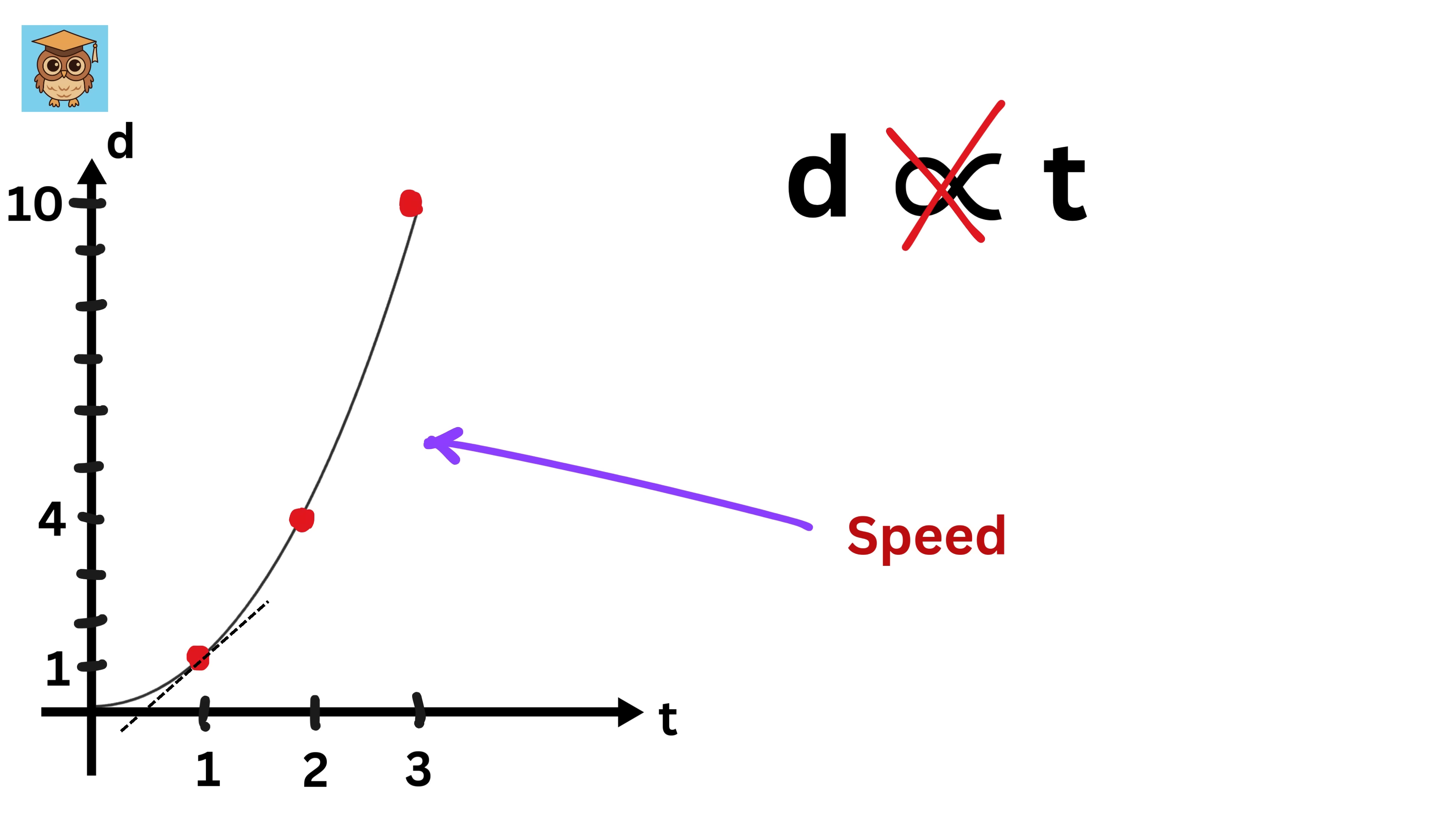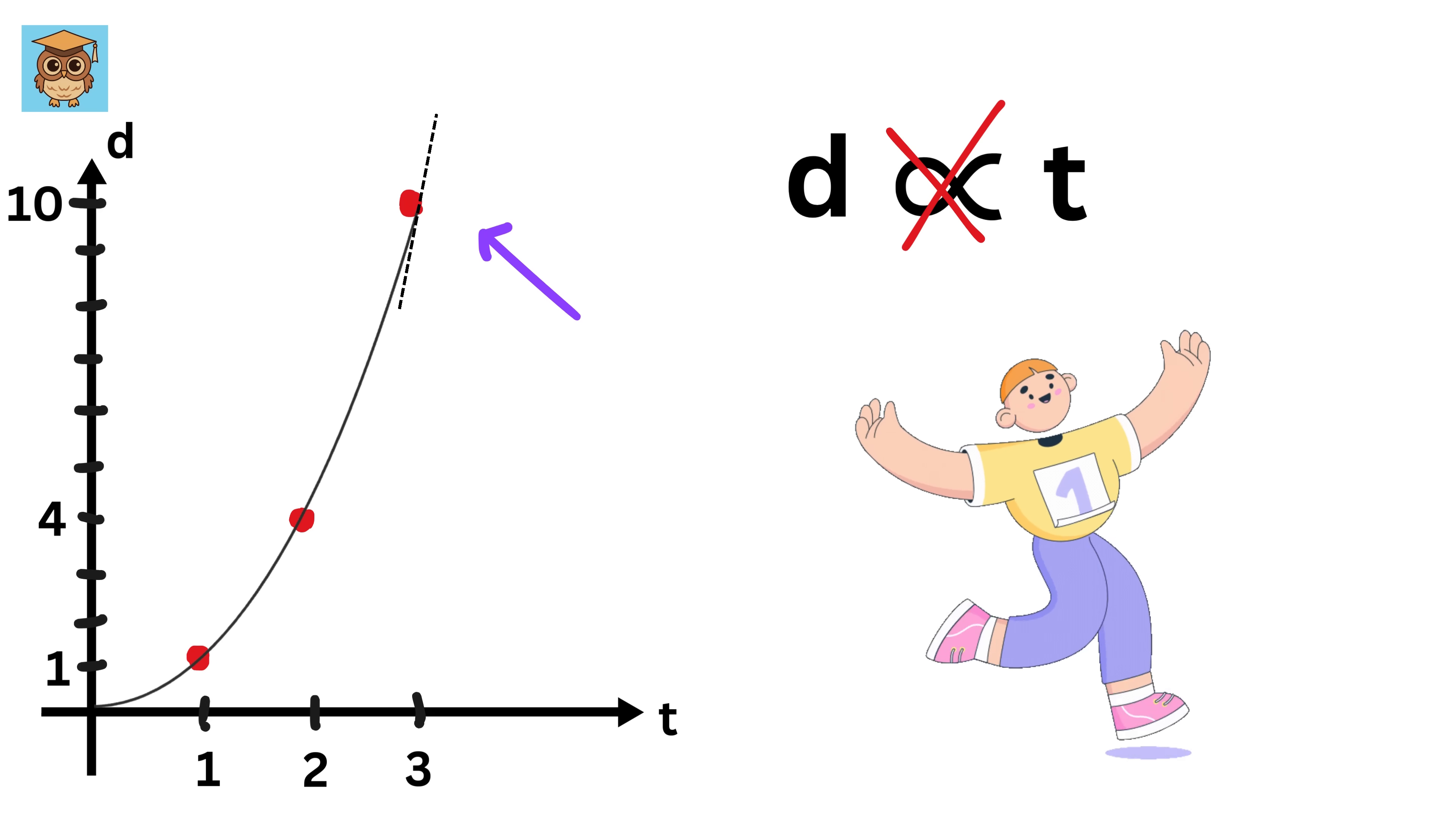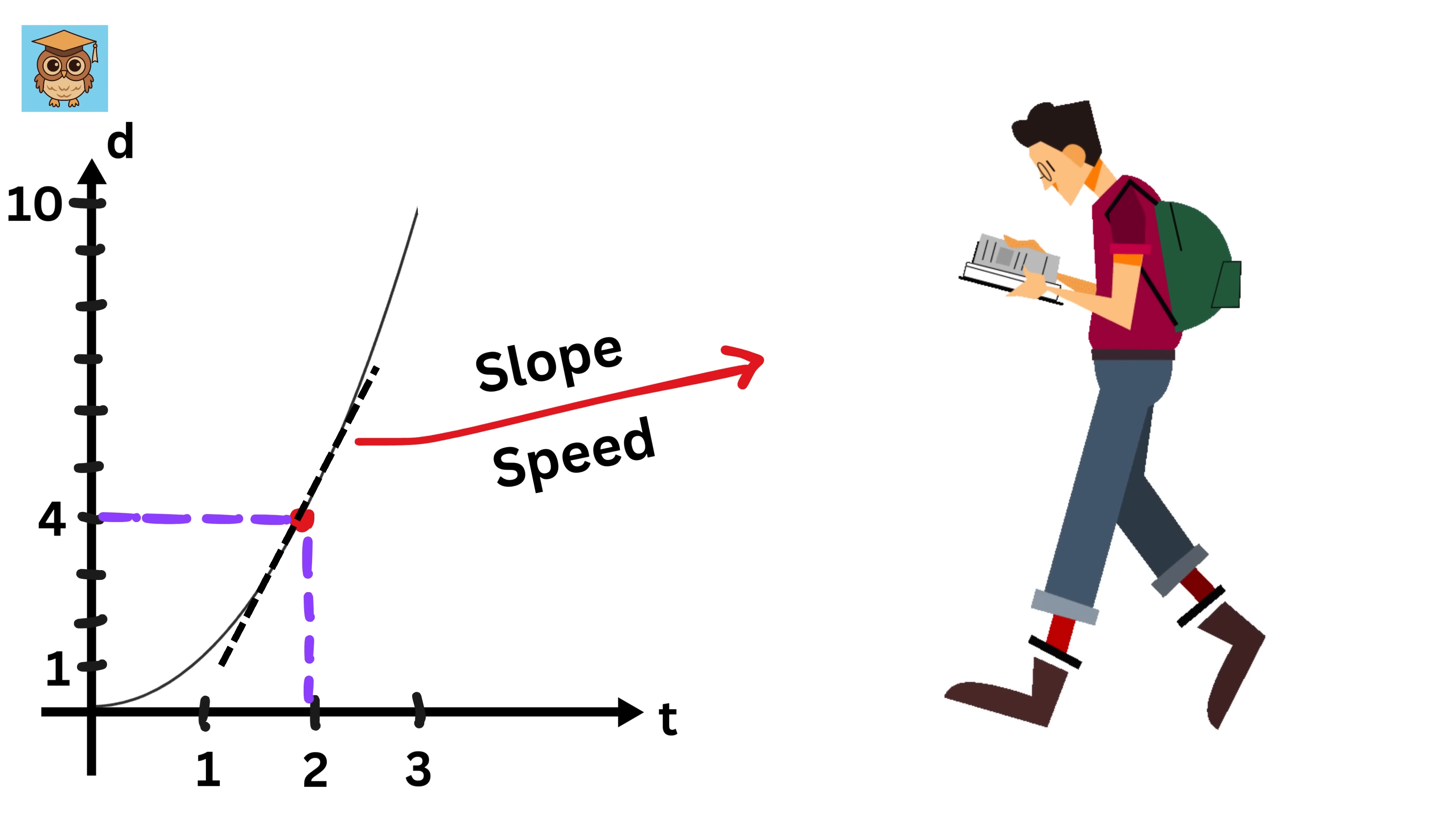In this case, your speed, or the slope of the graph, or the steepness of the curve, keeps changing. At the start, your speed, or the slope, is small because you're running slowly. As you speed up, the slope becomes steeper, showing that the distance you cover in each second is increasing. Therefore, at any given moment, the slope of the curve represents your speed at that exact point in time.